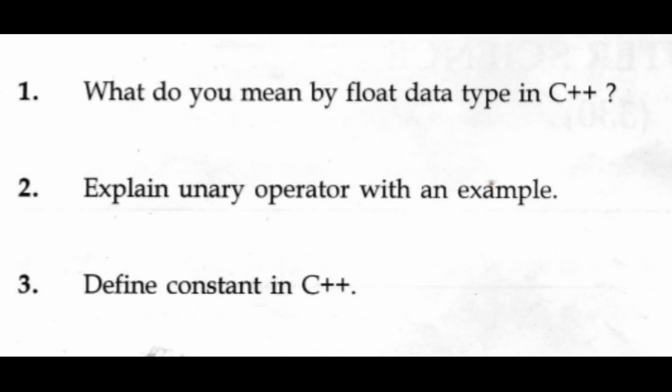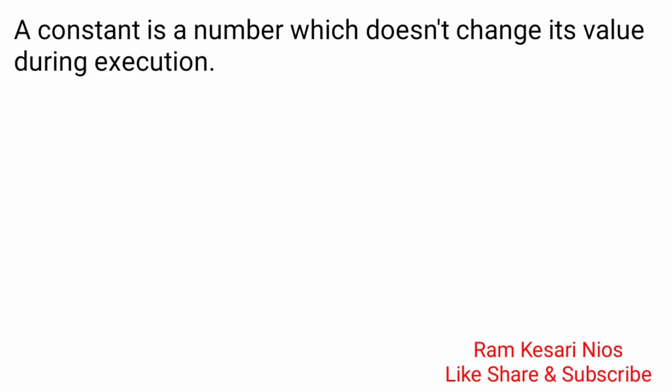Question 3: Define constant in C++. A constant is a number which does not change its value during execution.